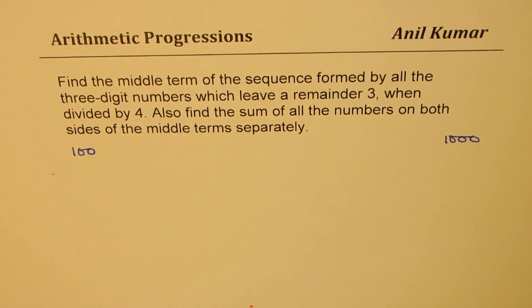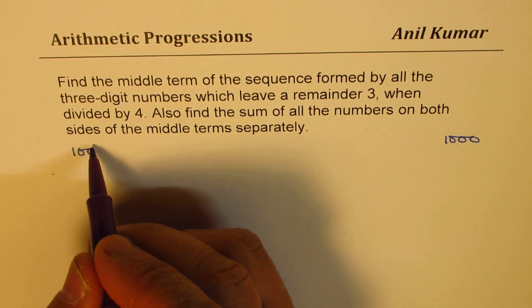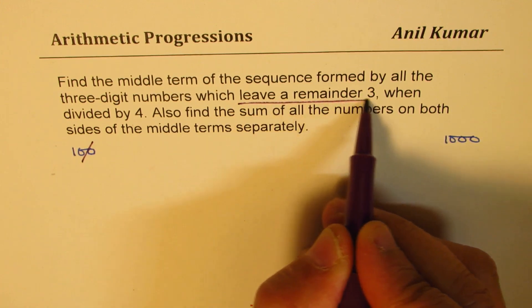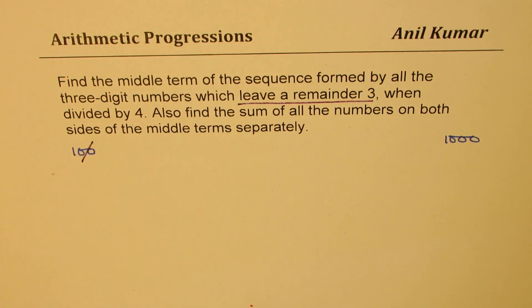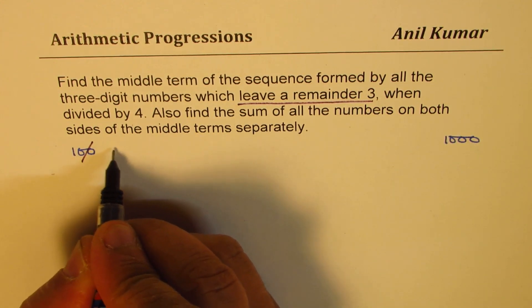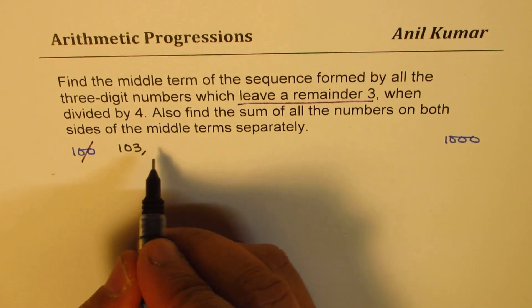Now, if you look into this series, 100 is a multiple of 4, 1000 is a multiple of 4. But we need with remainder of 3. That means the numbers are 103. So the numbers should be 103 and then keep on adding 4 to it. So 107, 111 and so on.